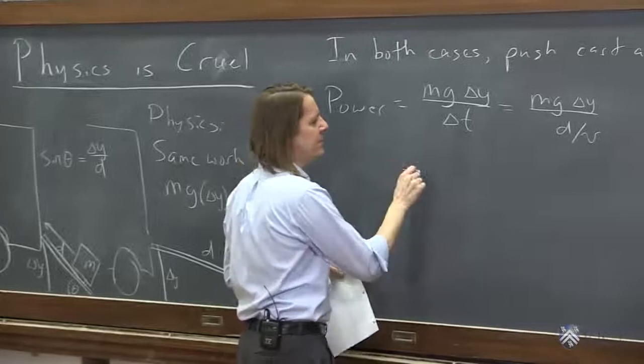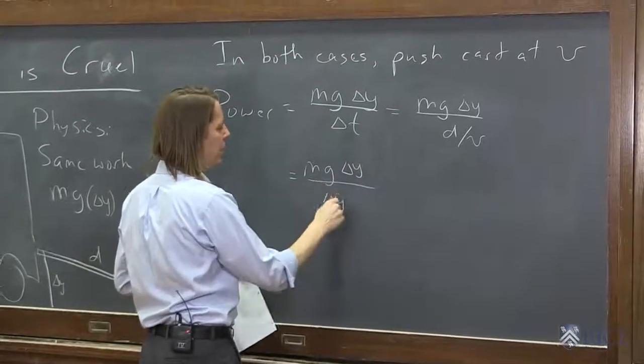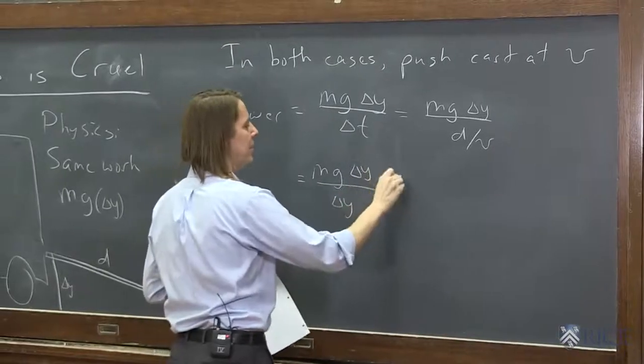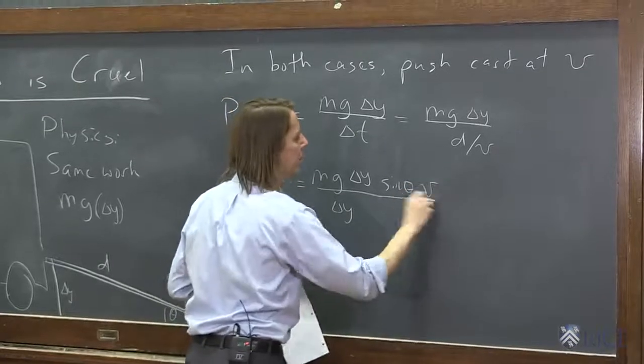So this is mg delta y over delta y over sine theta. And I guess I could go ahead and put the v up here as well.